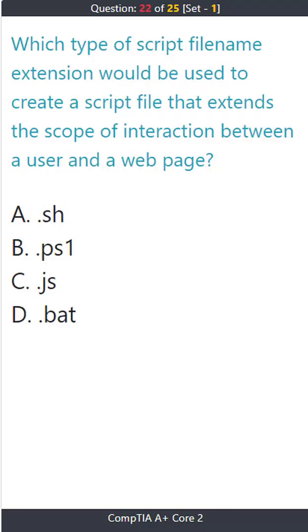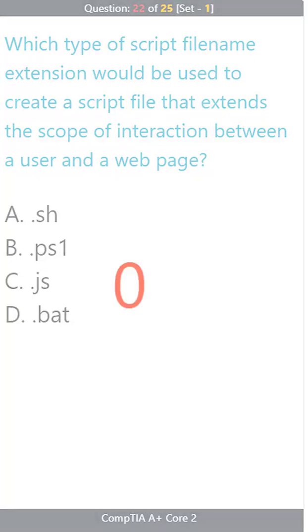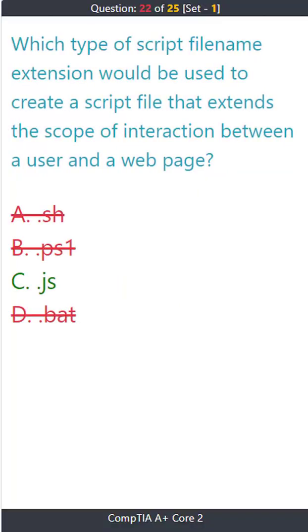Question 22: Which type of script file name extension would be used to create a script file that extends the scope of interaction between a user and a web page? A) .sh. B) .ps1. C) .js. D) .bat. The correct answer is C: .js.